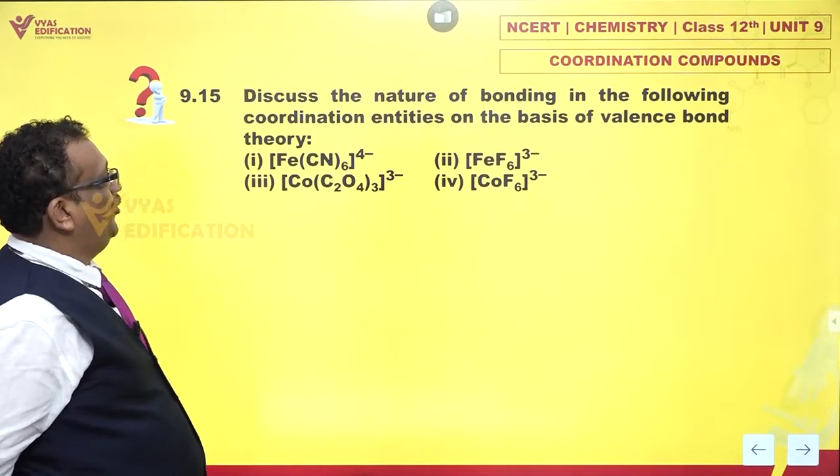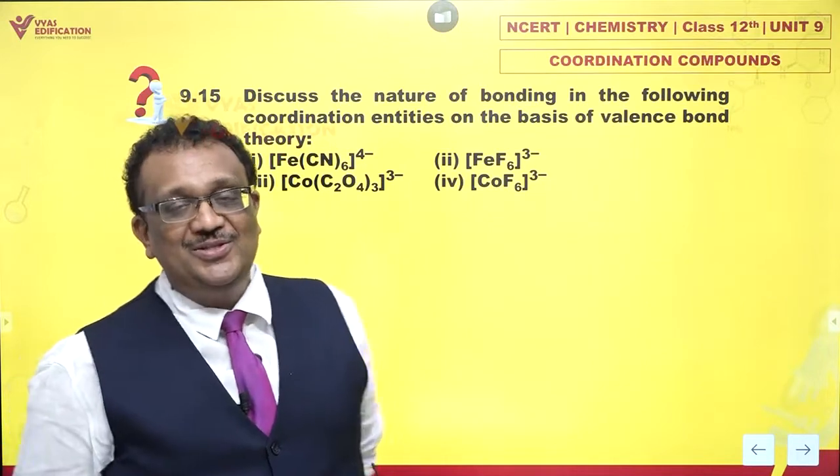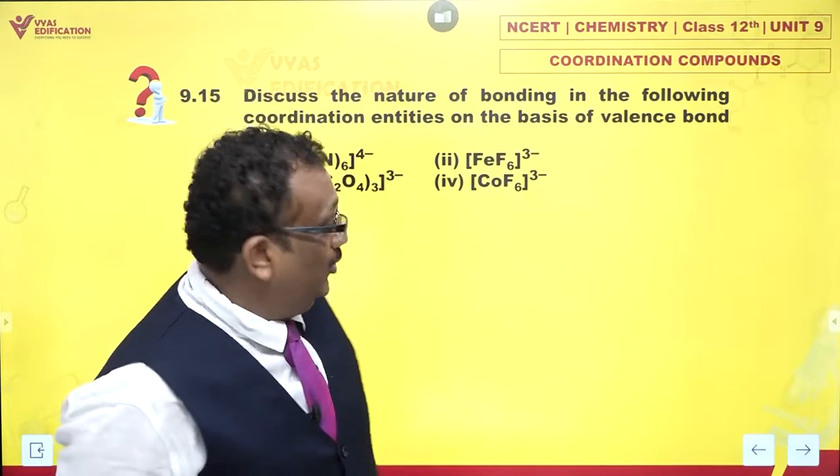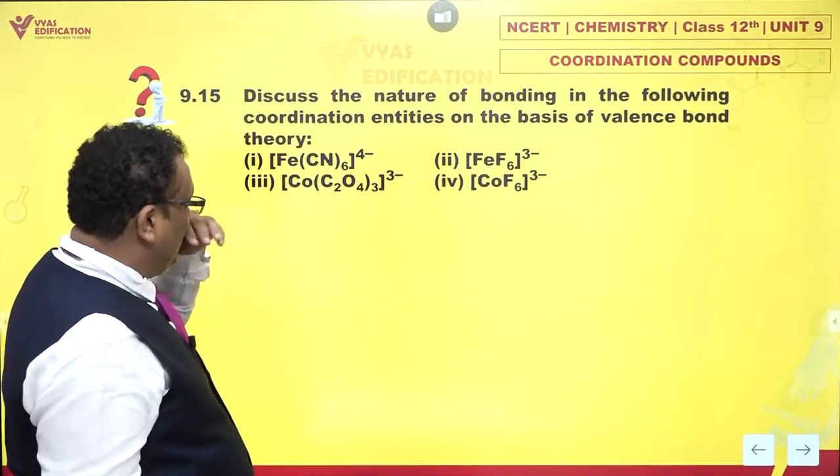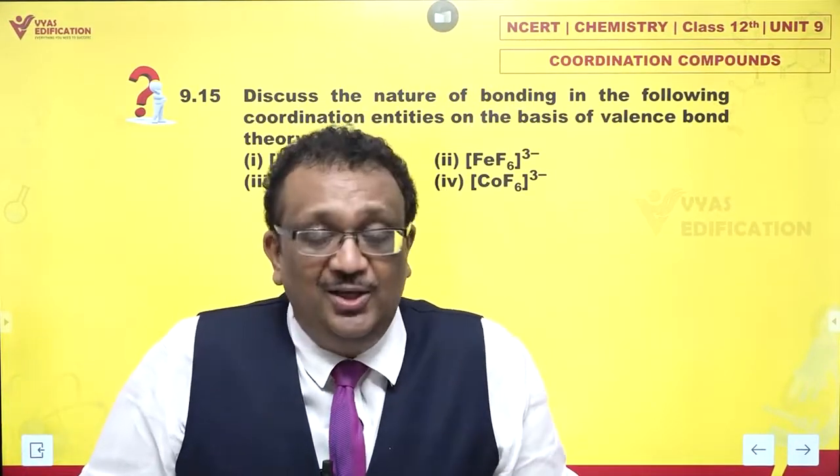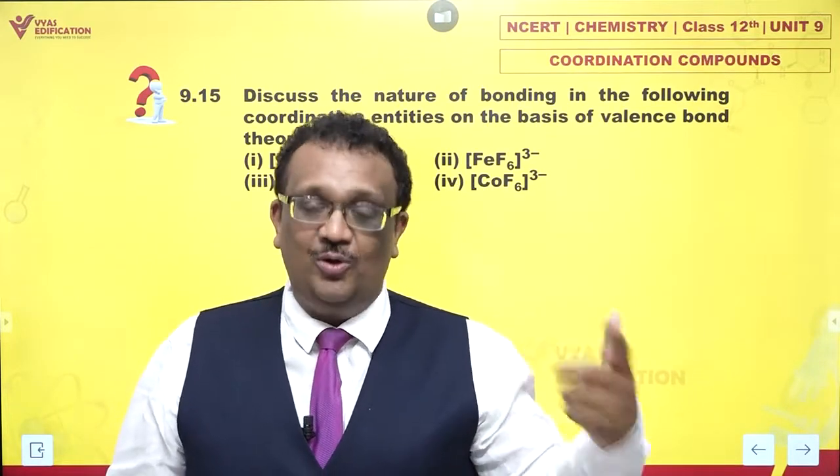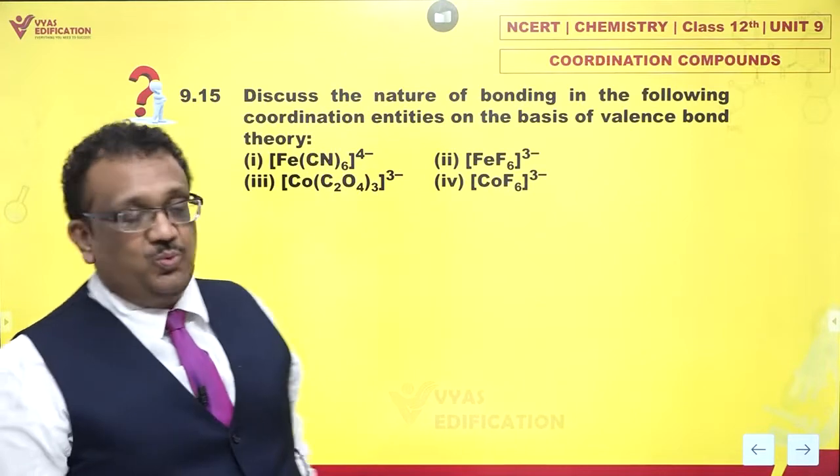Discuss the nature of bonding in the following coordination entities on the basis of valence bond theory. How do we do this? Let's take a look and figure out the steps one by one.